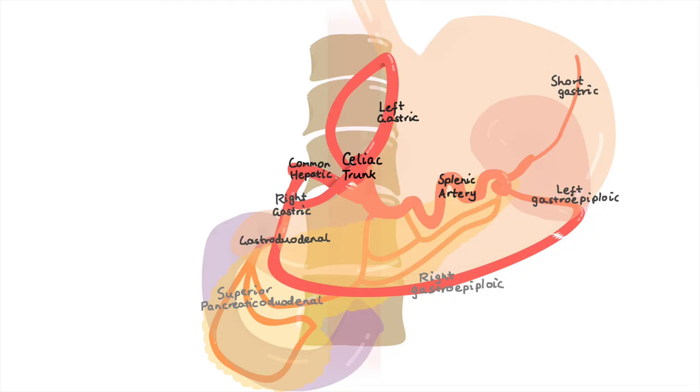The last organs to be supplied are the gallbladder, and the old Latin word for bladder is cystus. So here we have the cystic artery, and then the liver, which is supplied by the proper hepatic,